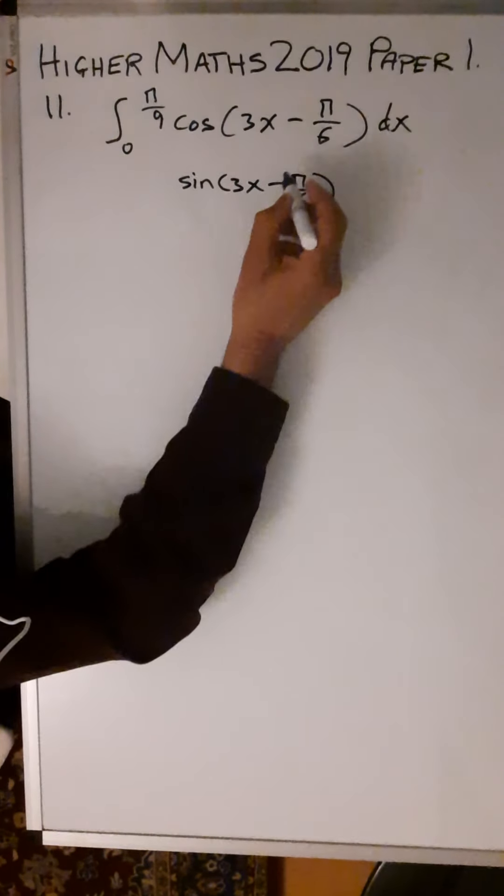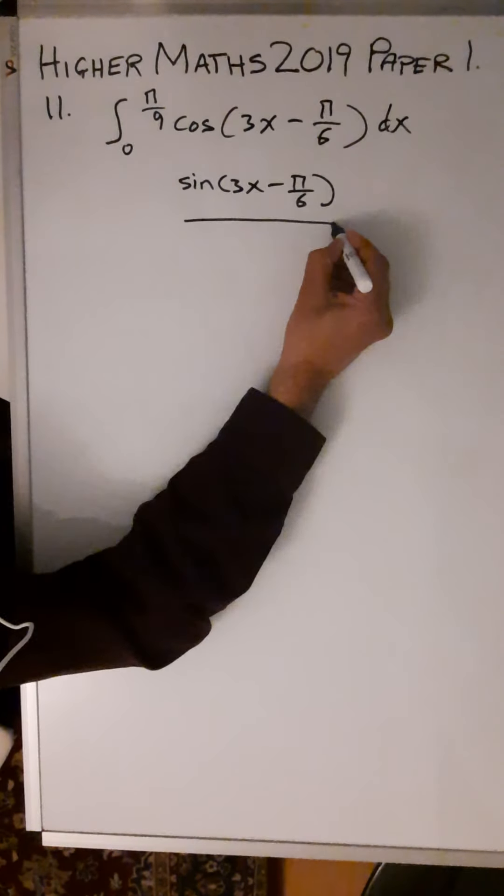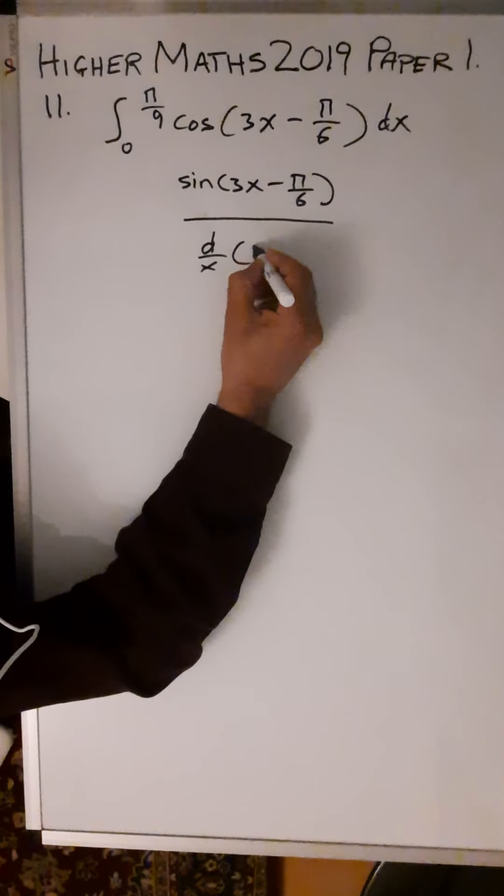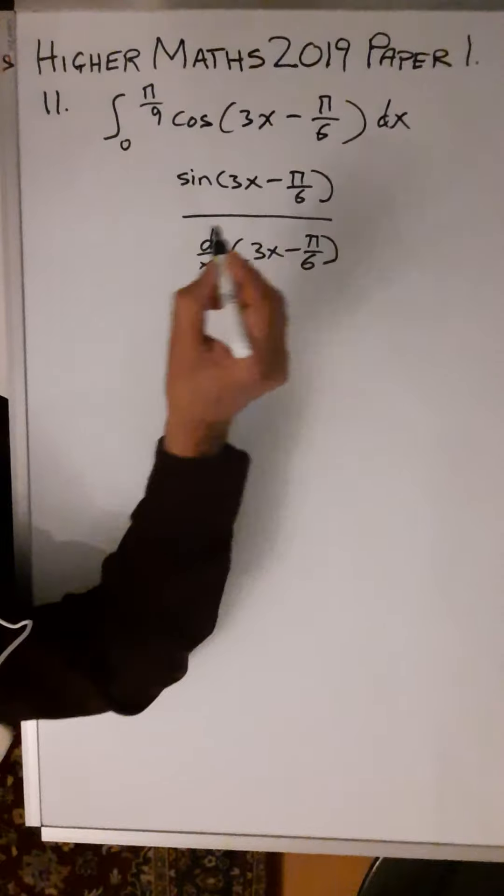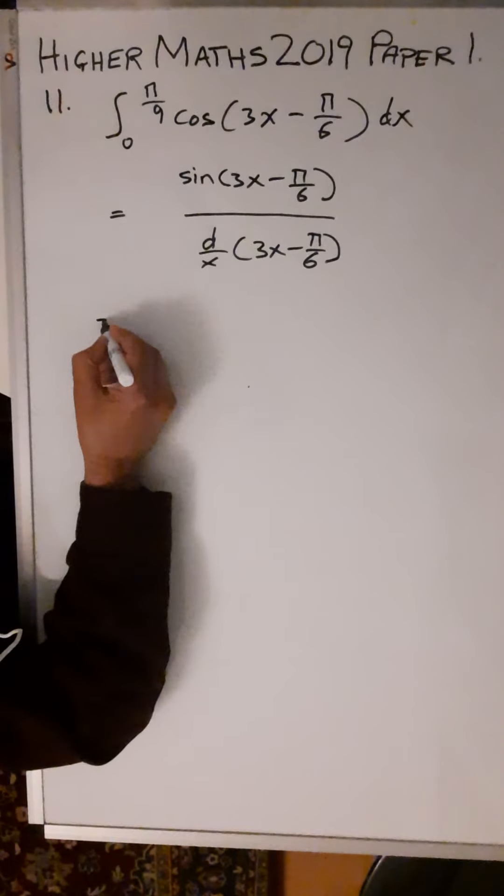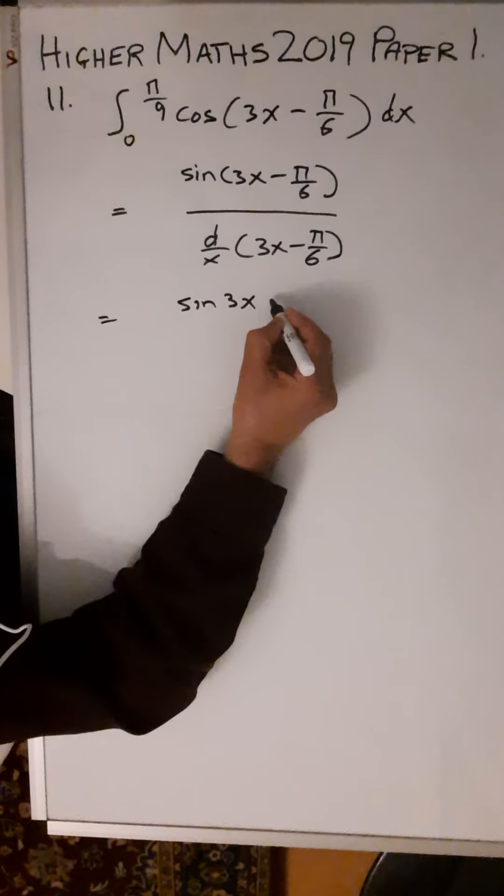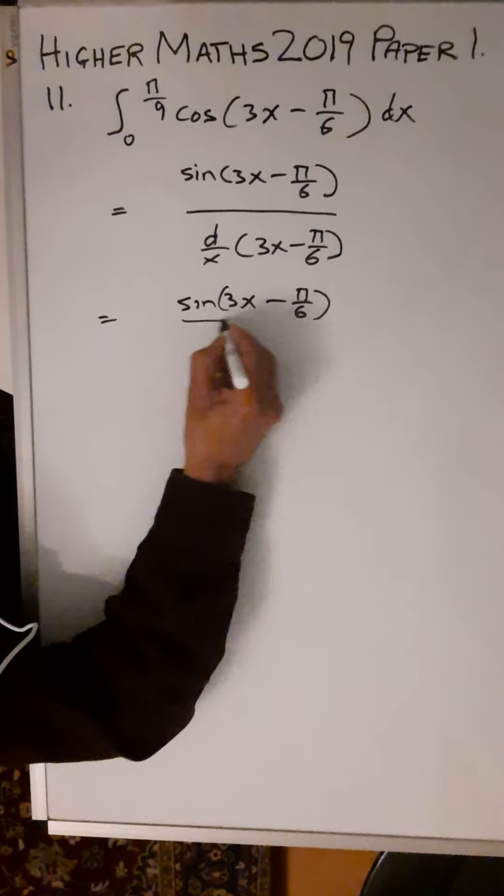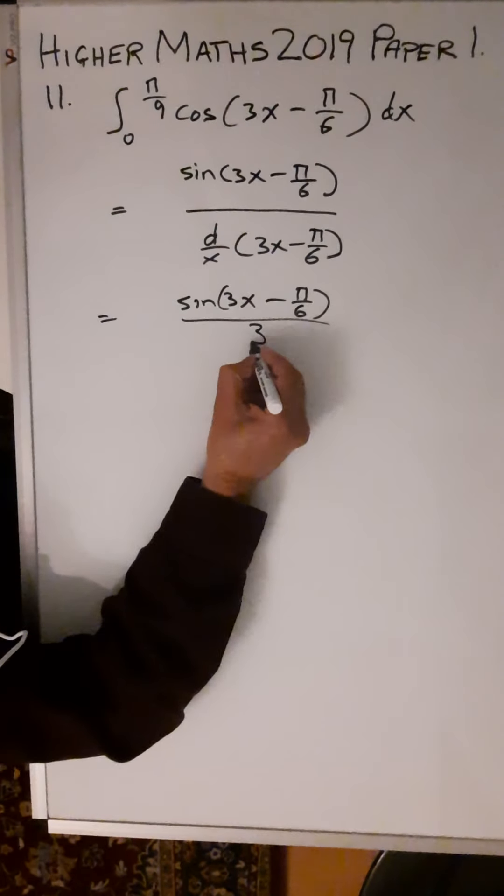You divide by the differential of what's inside the bracket: d/dx of (3x - π/6). That gives you sin(3x - π/6), and the differential of 3x - π/6 is just 3, so you divide by 3.